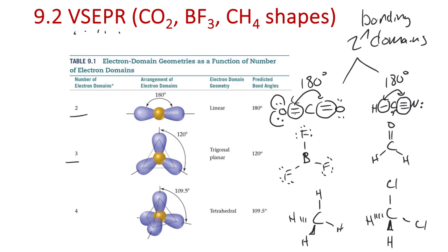Those three domains would fit into the trigonal planar geometry. Trigonal planar applies to molecules like BF3, where we have three domains about boron with no lone pairs, so just three total domains. These spread out with 120 degree bond angles — that's how they reduce repulsions. If boron tried to pull out of the plane, it would put the fluorines closer together and reduce those bond angles below 120 degrees, increasing electron pair repulsions.